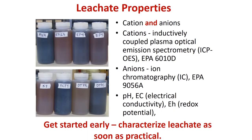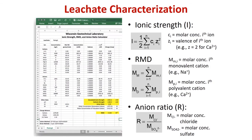The leachate sample has arrived at the laboratory. The first thing we're going to do is determine our cation and anion ratios. We're going to do this through ICP analysis and ion chromatography. What we get back is a whole bunch of individual species in parts per million. We're also going to look at the pH and the EC. These two properties are really important because we're going to use them later to determine if we've reached chemical equilibrium in our long-term performance tests of a product. So get started early.